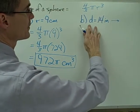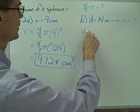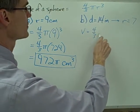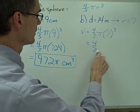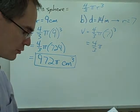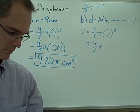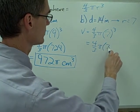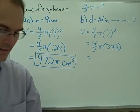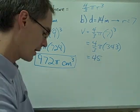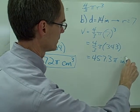Example 2b: Again, I'm given the diameter, so I need to first take half of that. That gives me my radius, which is 7. I plug that into my volume formula: 4 thirds pi times the radius cubed. 7 cubed is 343, and if I multiply that times 4 and divide by 3, I get 457.3 times pi cubic inches.